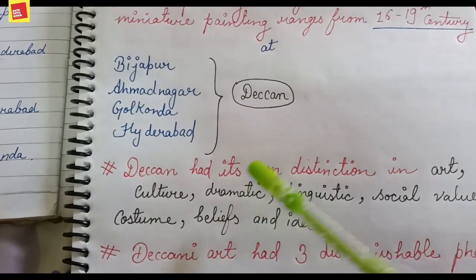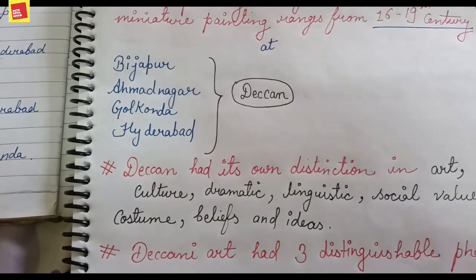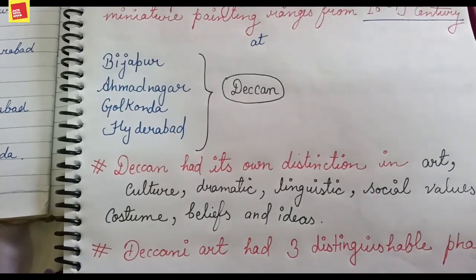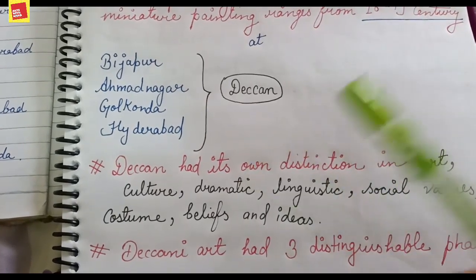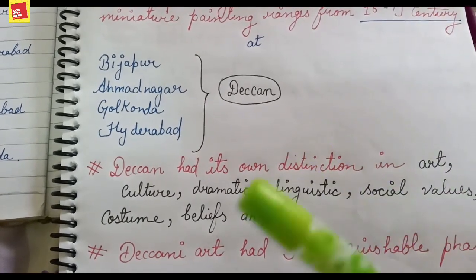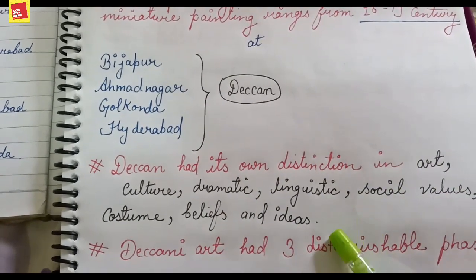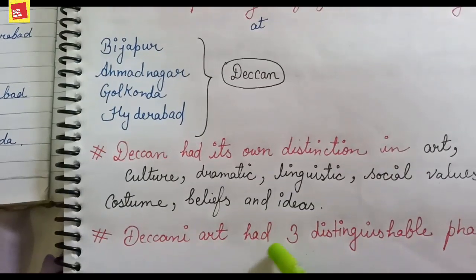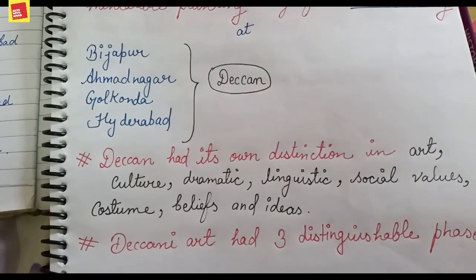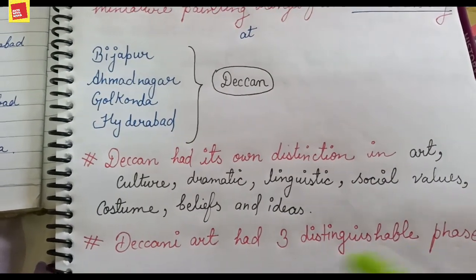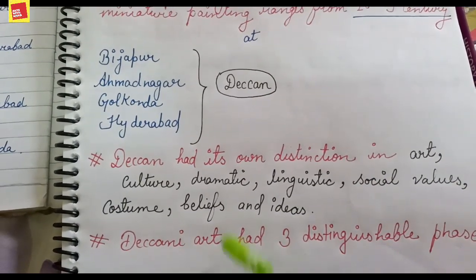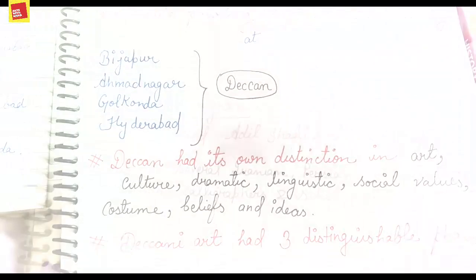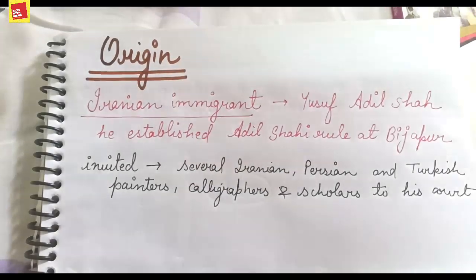Deccan has its own existence and all the paintings we have studied before were from different schools. Deccan art has three distinguishable phases. The first phase involves Iranian immigrants.